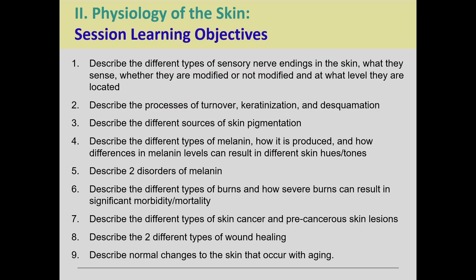For this next one, we're going to really focus on the physiology of the skin. We're going to talk about sensory nerve endings and what they do, turnover, keratinization, desquamation, skin pigmentation and melanin, how it's produced and how melanin levels can result in different skin colors. We're also going to cover disorders related to melanin, burns, skin cancer, wound healing, and aging. A lot is going to be covered here, but we're not going to go super deep.